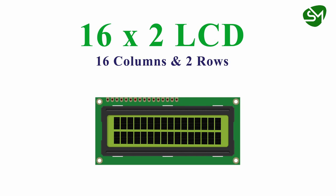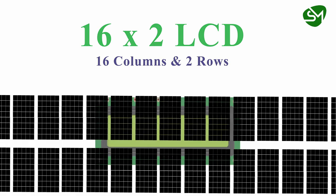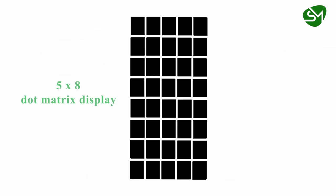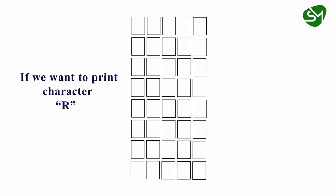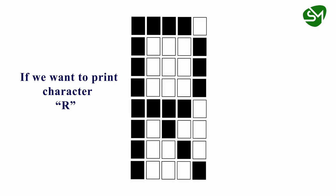Now let us understand how this display element displays numbers or characters. These display elements are nothing but a 5x8 dot matrix display, which has 5 columns and 8 rows. For example, if I want to print the character R in this display, I can make the corresponding bits of the dot matrix display to be high. Similarly, you can display any numbers or characters using this dot matrix display.